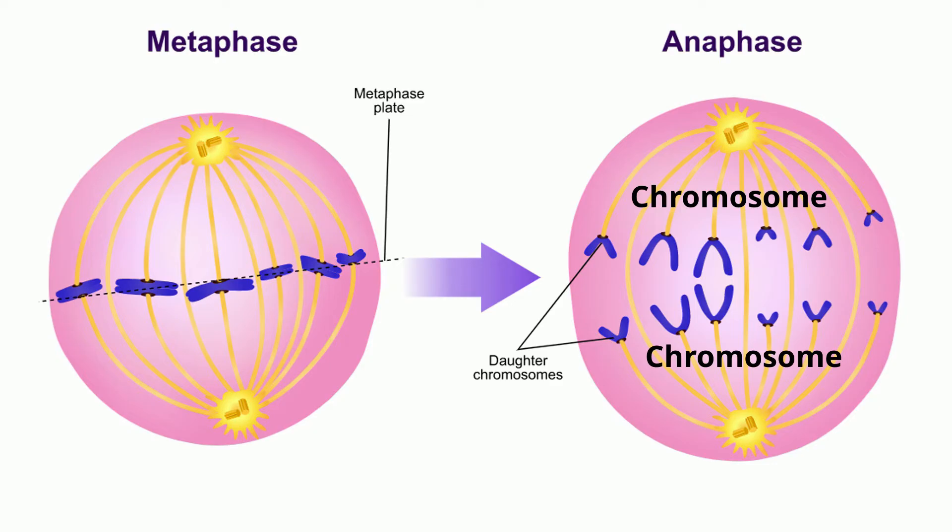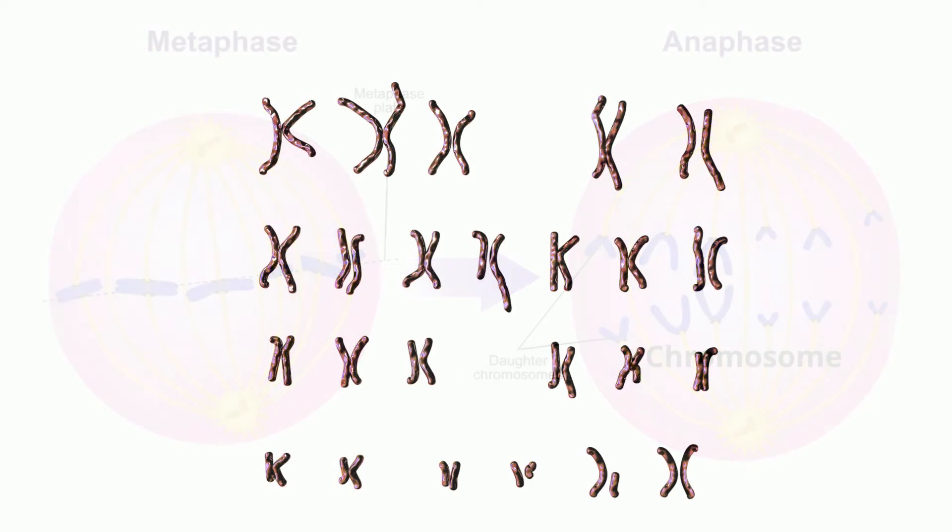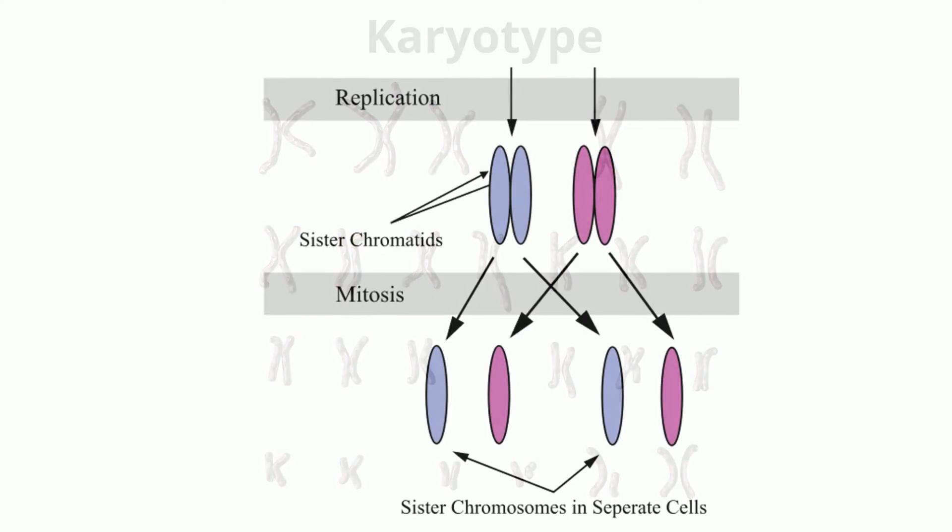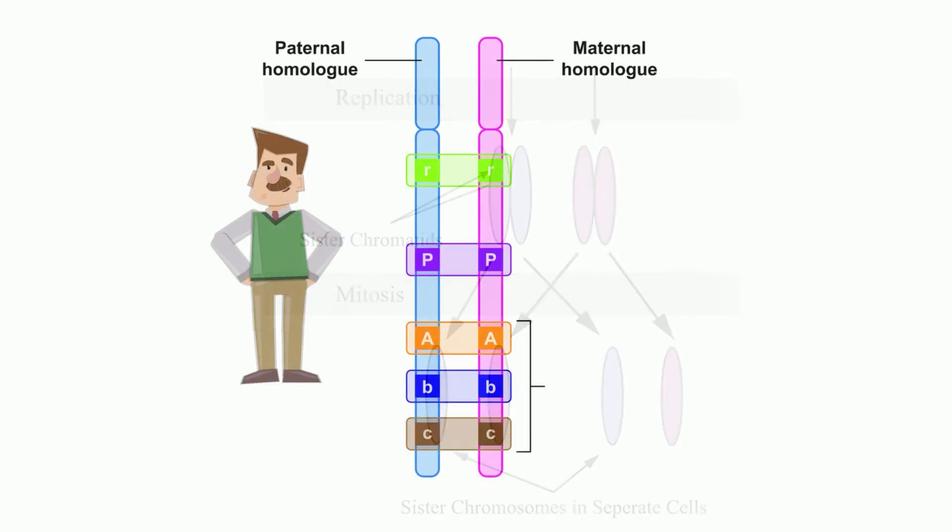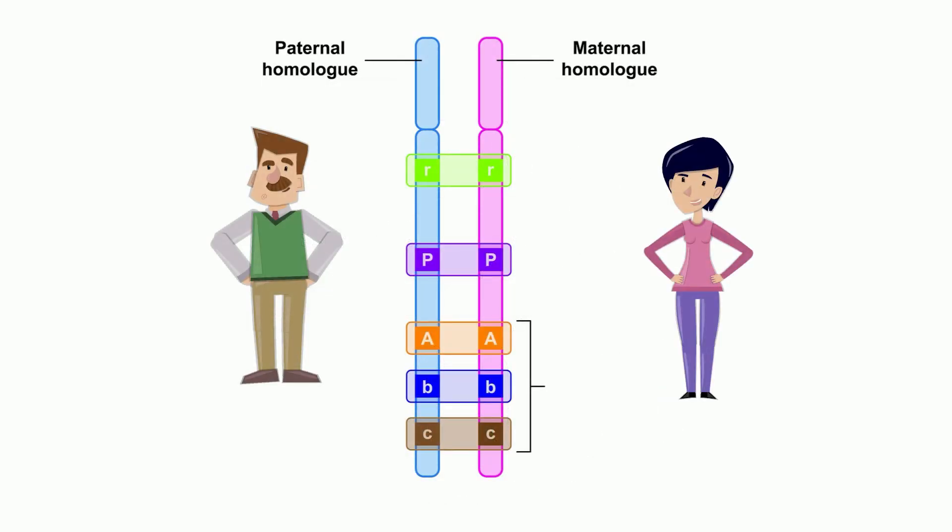But sometimes you will see chromosomes represented like this. This is a karyotype. In humans, the sister chromatids cross over during meiosis and create homologous chromosomes, which are two chromosomes in which one is from the male and the other is from the female. They have the same genes in the same order, but they have different alleles.